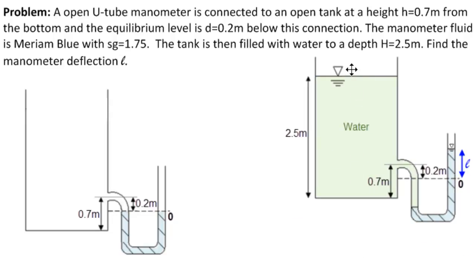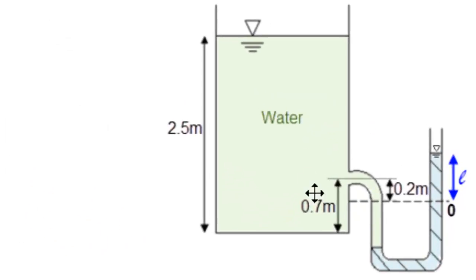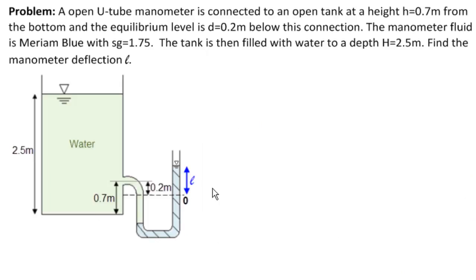What happens—the tank is then filled with water to a depth of h equal to 2.5 meters. So we have this situation. We fill with water. It's still open. The upside-down deltas are for open, and this is open. And what happens is that the water presses down the oil, and the manometer deflects from the zero position our distance of L. And we're to find this L here. Okay, so here we have our problem set up, and we're to find L.